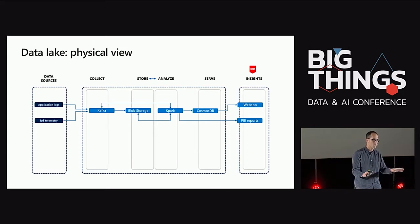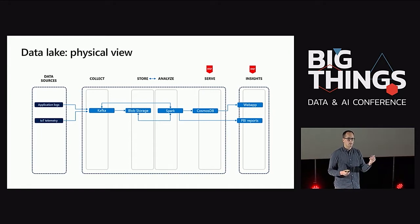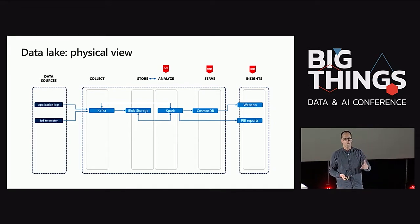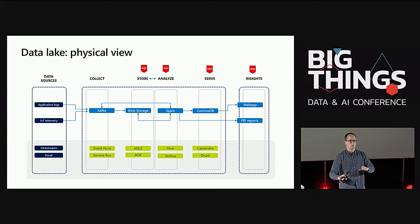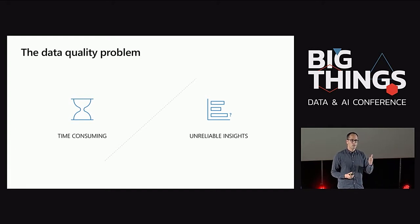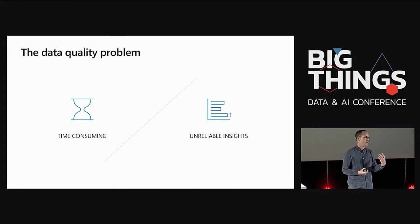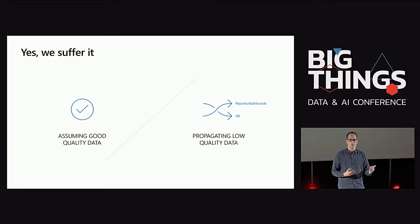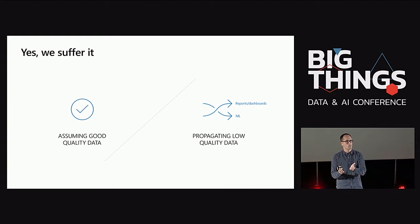They talk to developers and ask: do we have any bug here in the front-end, in the web app? Is this real or not? The front-end developer says no, everything is OK. So then we go to the back-end developers and ask: do we have any issue here? And the same question goes to the data engineers working in the data platform. This is independent of the technologies or frameworks we are using. And the data quality problem actually has two different flavors: first, it's really time-consuming, and second, we get a lot of unreliable insights.